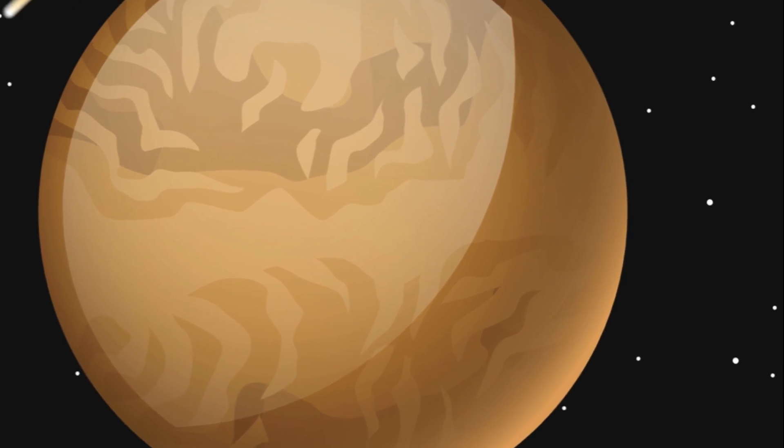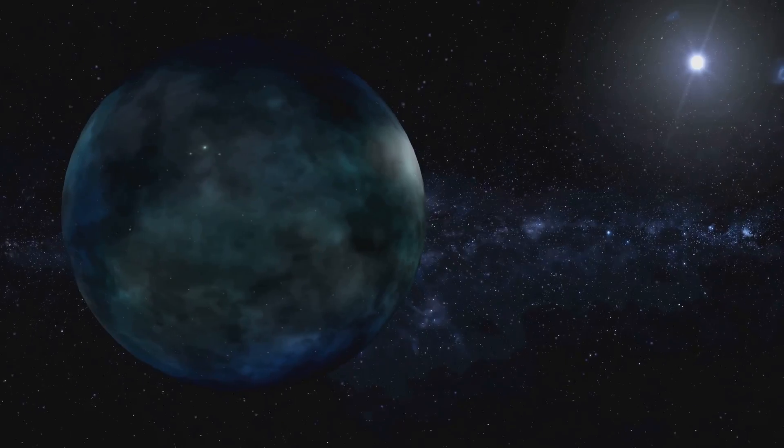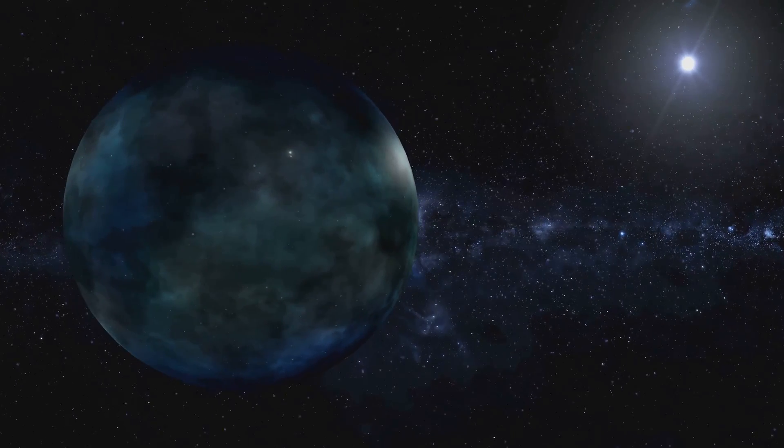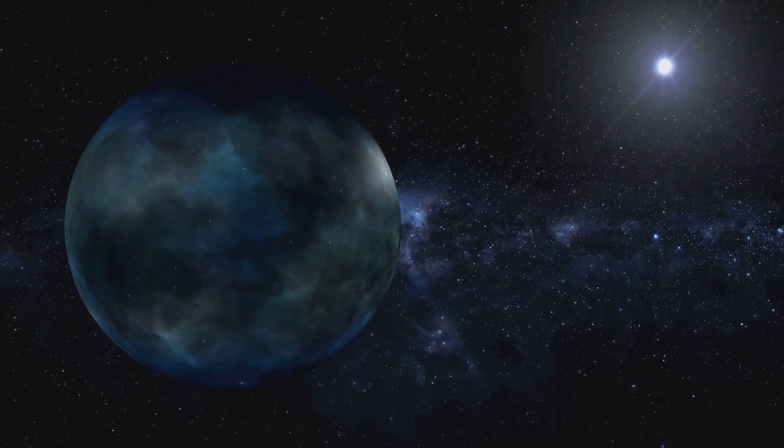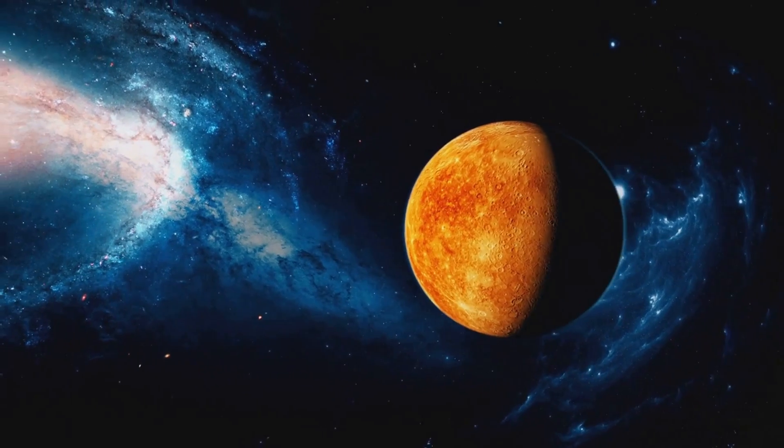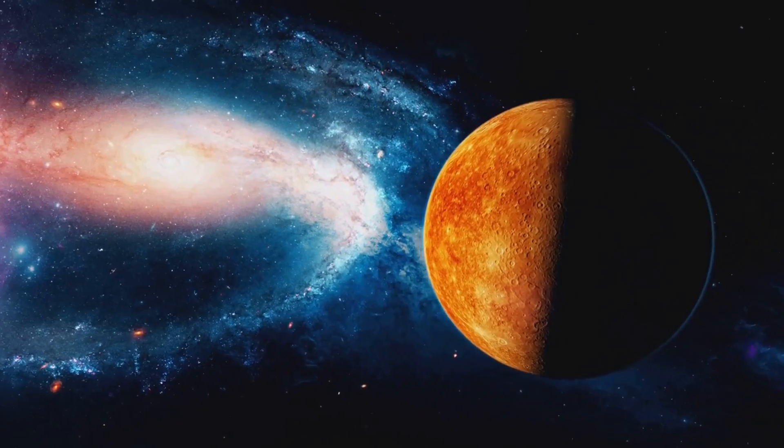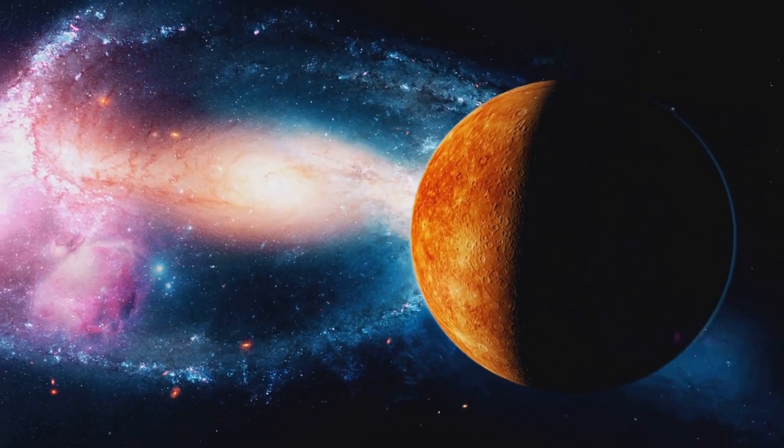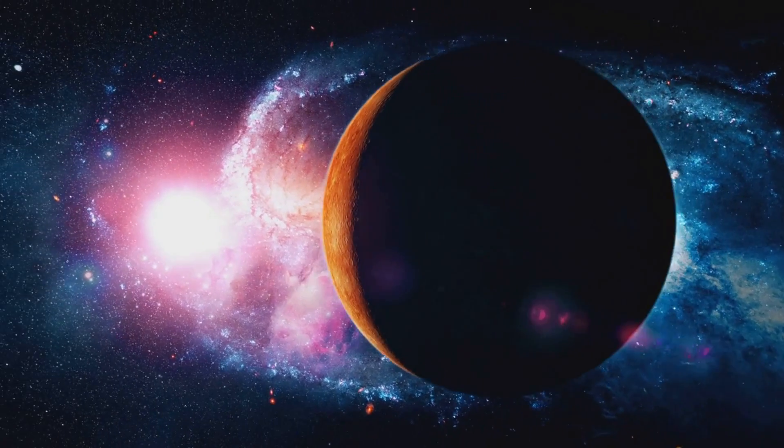This stark contrast in temperature, from searing day to freezing night, is due to Mercury's absence of a significant atmosphere. An atmosphere acts like a blanket, trapping heat and distributing it evenly around the planet. But Mercury, with its thin exosphere, lacks this heat distribution system. The result is a planet that experiences the most extreme temperature variations in the solar system.